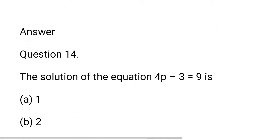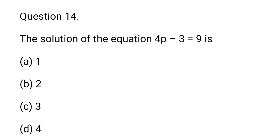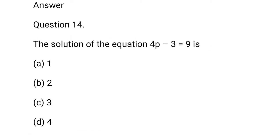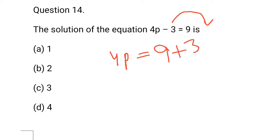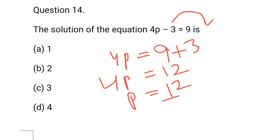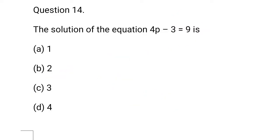Question number 14: The solution of the equation 4p minus 3 is equal to 9. First, 3 goes to RHS and becomes add. So, 4p is equal to 9 plus 3, which is equal to 12. So, 4p equals 12, and p is equal to 12 upon 4. 4 times 3 is 12, so p is equal to 3. This is the answer.